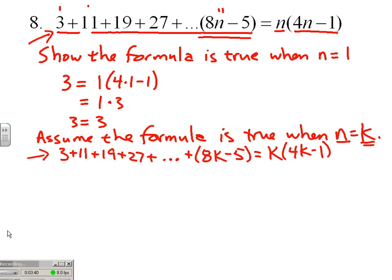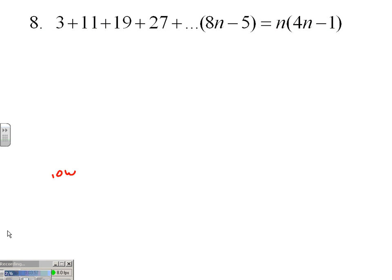The original equation is for any value of n and we're hoping that's true. This is for a specific k. A specific domino tips and we can assume it's true because one of the dominoes tipped. So our goal is to show that if a domino tips it leads to the next domino tipping. Our next step is to show the formula is true when n equals the next domino, k plus 1.